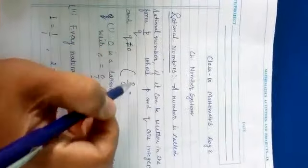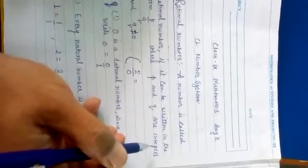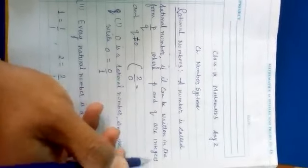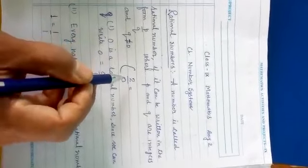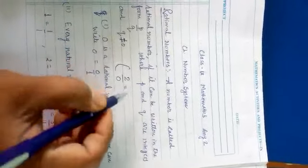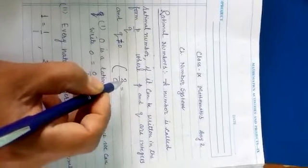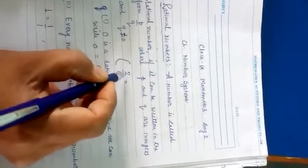Where p and q are integers and q is not equal to 0. Why should q not be equal to 0? Because if you write 2 equal to 2 upon 0, it becomes infinite. Infinite means we cannot define it.